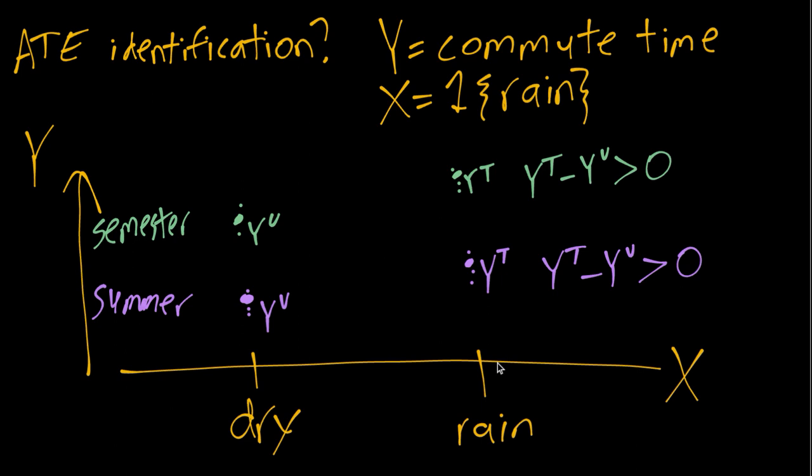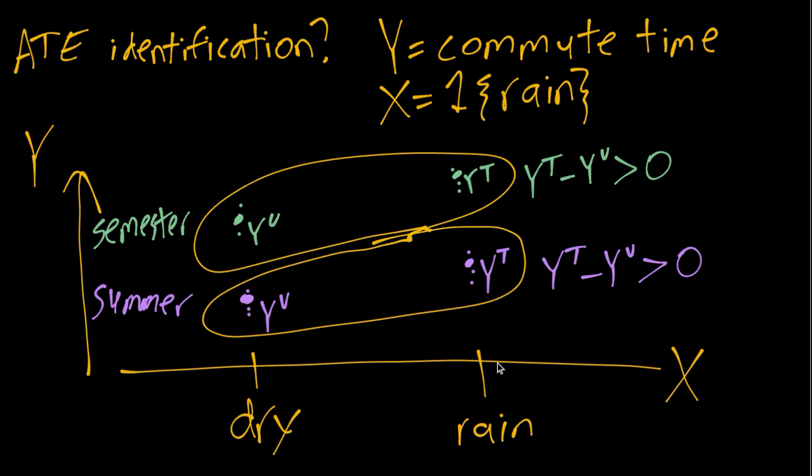Now here's where the identification problem comes in, in particular for that unconfoundedness assumption. If we were able to randomize whether it rained or not during the semester and during the summer, then we could get even parts of treated and untreated outcomes in both the summer and the semester, and then we could estimate the true ATE properly.